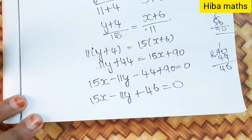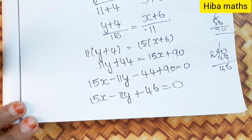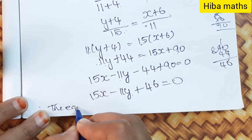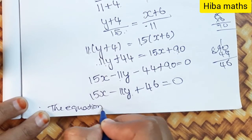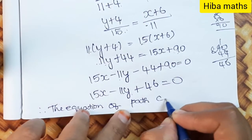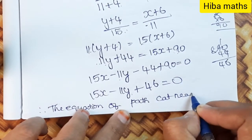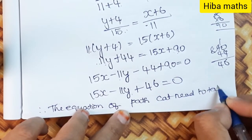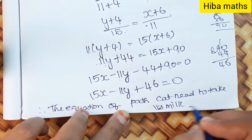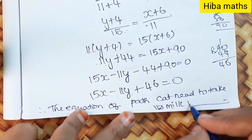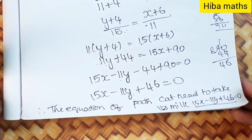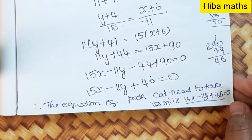This is the equation of the path the cat needs to take to get its milk. Therefore, the equation of the path is 15x minus 11y plus 46 equals 0. Thank you so much for watching.